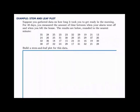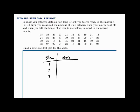Let's build a stem and leaf plot. Suppose you gathered data on how long it took you to get ready in the morning. For 40 days you measured the amount of time between when your alarm went off and when you left the house. The results are below, rounded to the nearest minute. For a stem and leaf plot, we divide each value into its stem and its leaf. The stems are generally the tens place. Since our values are two-digit values, the first digit represents the stem and the second digit represents the leaf. Looking through the data, all numbers start with either 1, 2, or 3, so our stems are 1, 2, and 3. For each value, we place that leaf in the correct category.